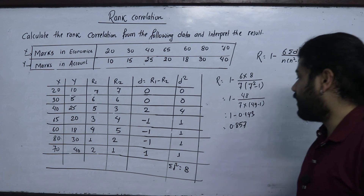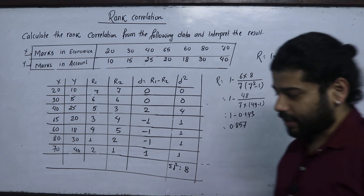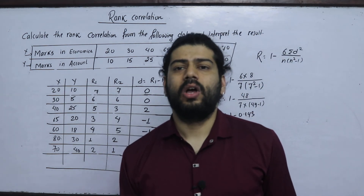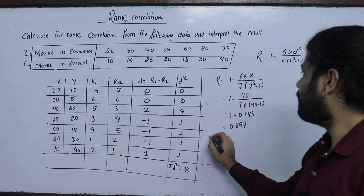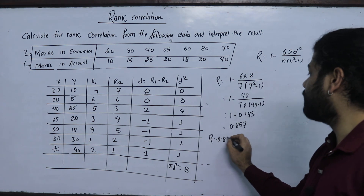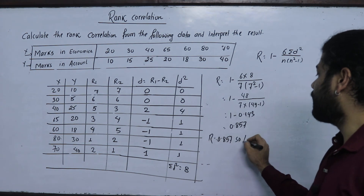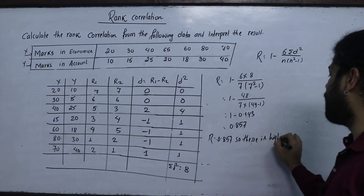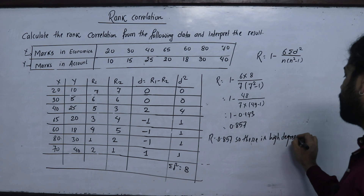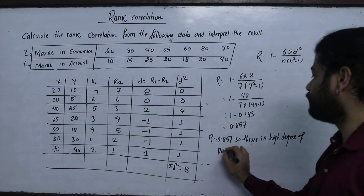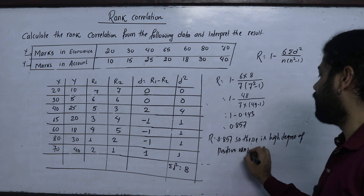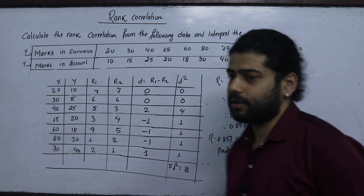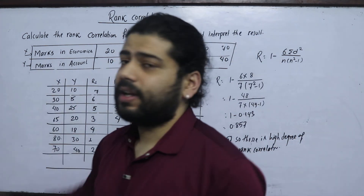The rank correlation R = 0.857. Comparing to the previous class where R = 1, here R = 0.857. So there is a high degree of positive rank correlation in this subject. This means the highest-ranked student in one subject is also highly ranked in the other.